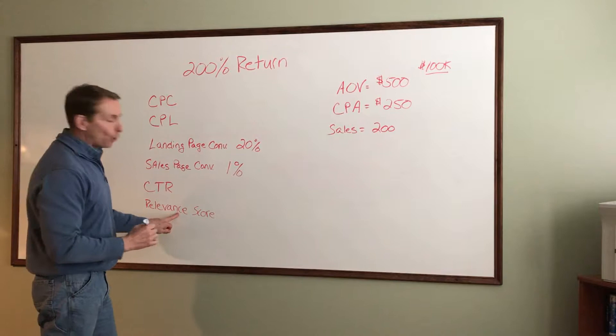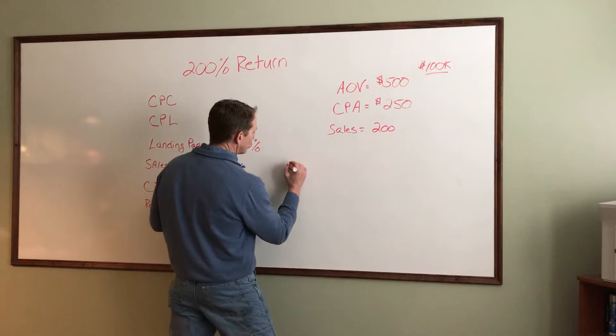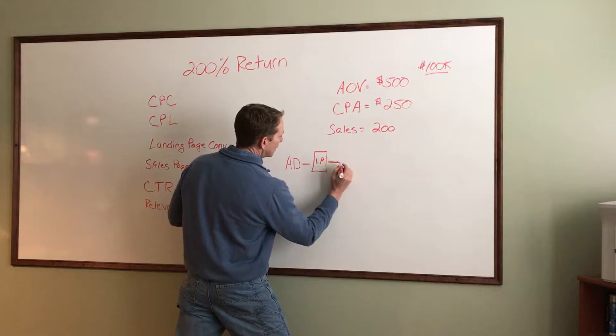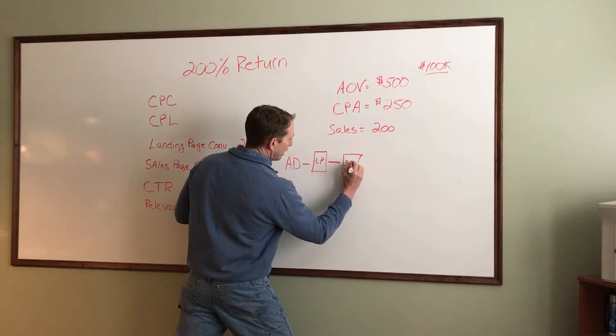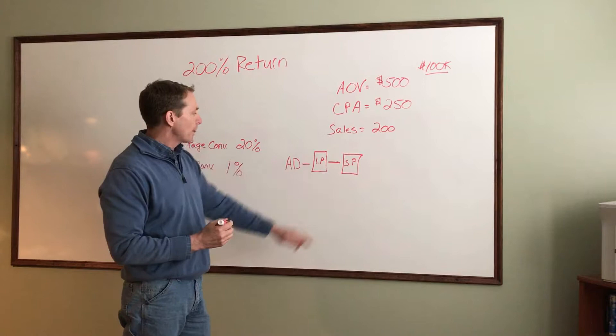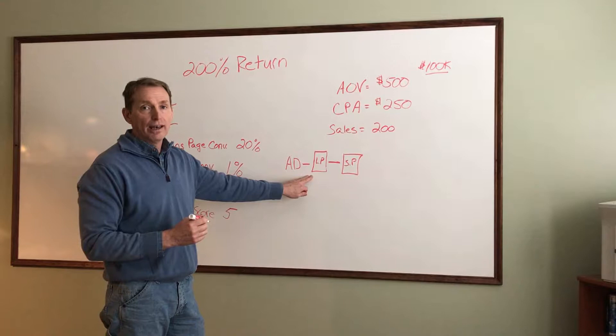Let me draw out a little scenario to make it easier to understand. We're running an ad, sending people to a landing page — LP or opt-in. They're hitting a sales page. Now, this could be a webinar, a long-form video sales letter, or a regular text sales letter. And if you're using the Ascension model, take all your products and services, add them together and divide by the number of products and services. That gives you your AOV.